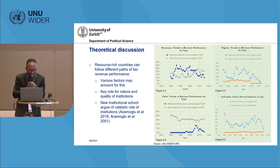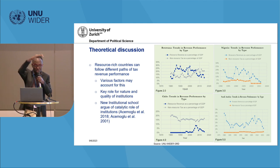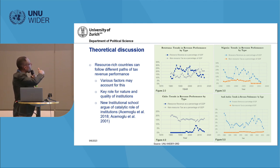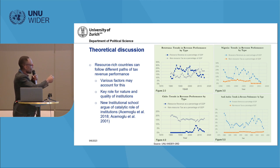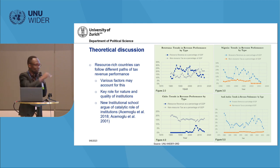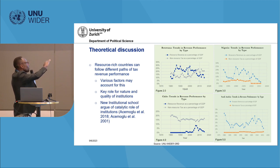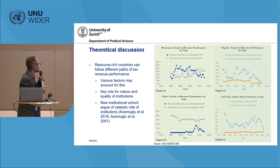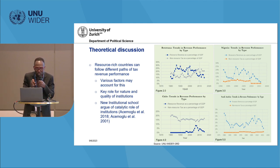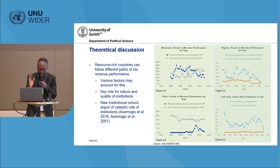If you look at figures two and three, we see that Botswana collects a fairly reasonable level of resource revenues. But if you also look at non-resource tax as a percentage of GDP, they do not do badly — it's been fairly increasing over the period. But let's look at Nigeria: the resource revenue trend is quite high, although fluctuating. In terms of non-resource taxation, it's virtually flat, if not decreasing over time. What accounts for these different paths for different countries? We try to look at the role of the quality of institutions.